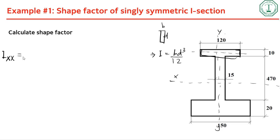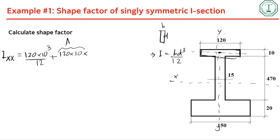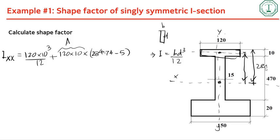For the top flange: 120 times 10-cubed divided by 12, plus 120 times 10 times h-squared. The distance h is 284.74 minus 5, because the total depth to the centroid is 284.74 mm and the flange half-depth is 5 mm.